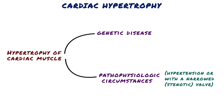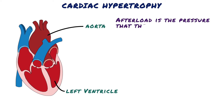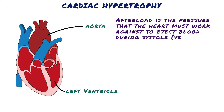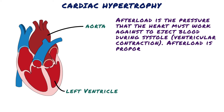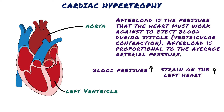Let's take it one side at a time. The left heart squeezes blood to the body — namely to the entire systemic vascular tree via the aorta. Afterload is the pressure that the heart must work against to eject blood during systole (ventricular contraction). Afterload is proportional to the average arterial pressure, so one cause of increased strain on the left heart is increased blood pressure in the arteries — hypertension.